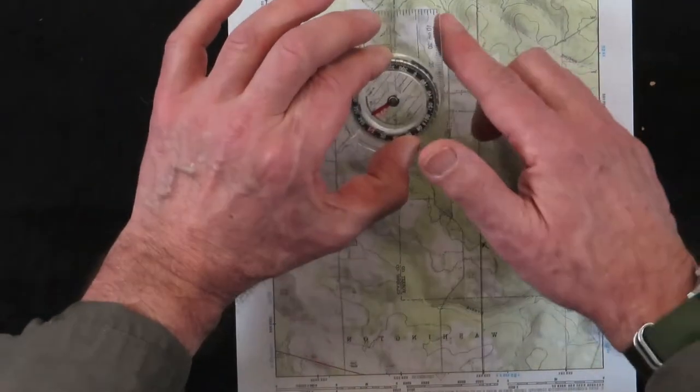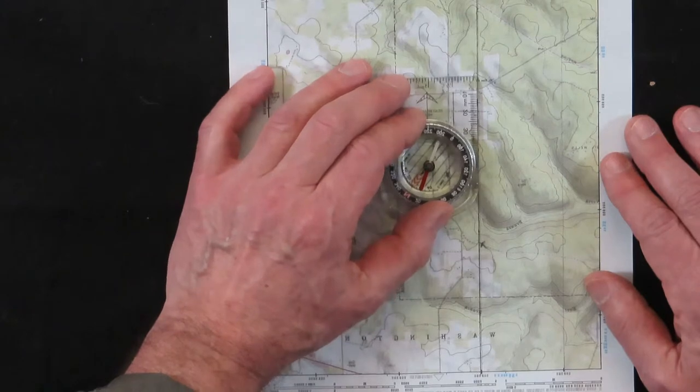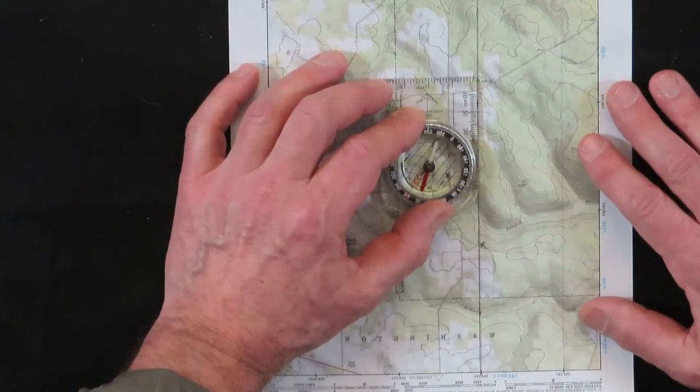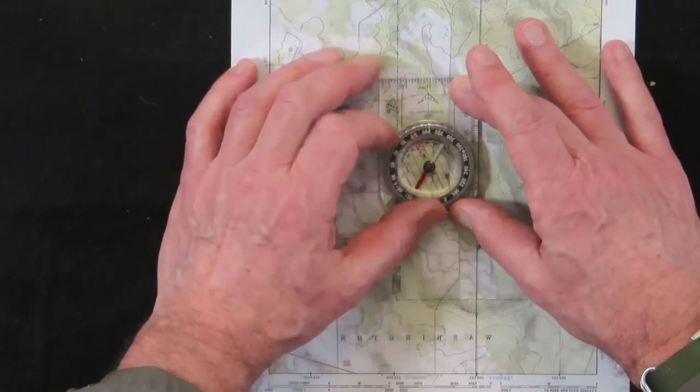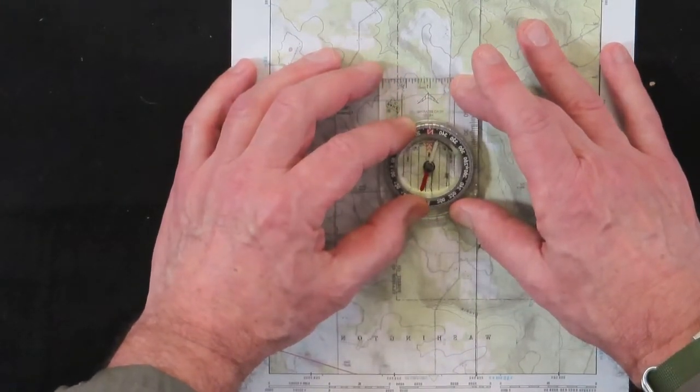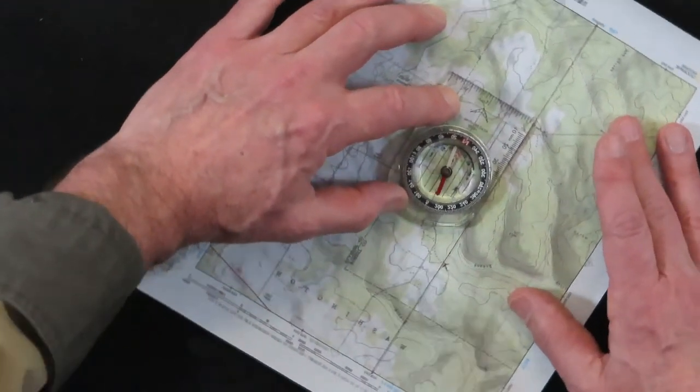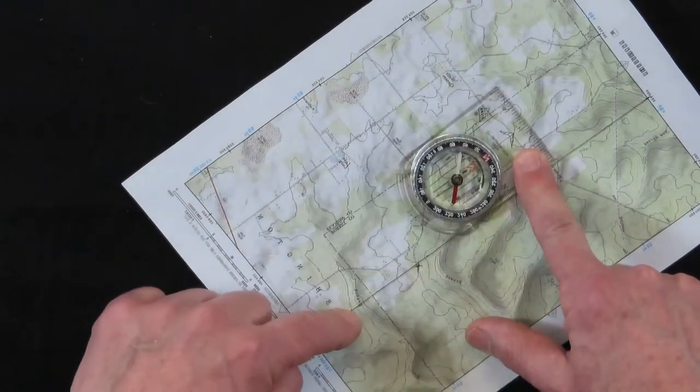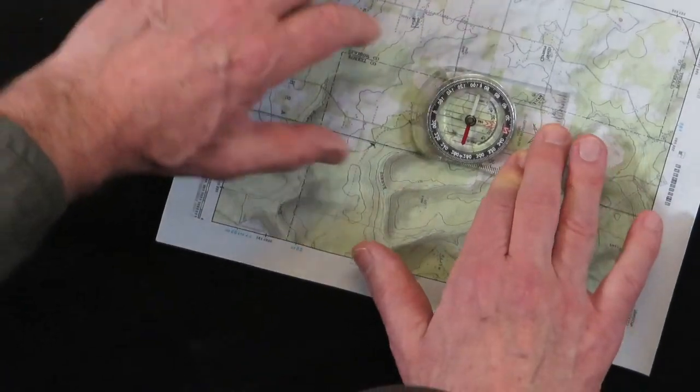So with the base plate, you're now able to put that on that line there so it's perpendicular to it. And then what you want to do, you have your north line on there, north direction, and you're going to turn that map until this north-south line is oriented to your compass, north-south.